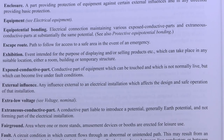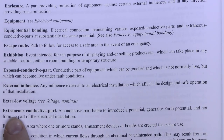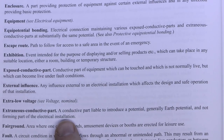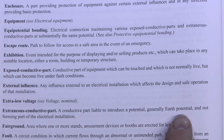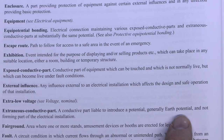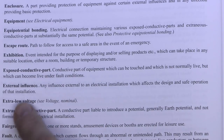Exposed conductive parts are not normally live but can become live if there's a fault, such as shorting onto the metal case of a socket. The other definition is extraneous conductive parts — still conductive and still a part, but in this case extraneous. This is a conductive part liable to introduce a potential, generally earth potential, and not forming part of the electrical installation. This covers conductive items typically made of metal and not part of the electrical installation.